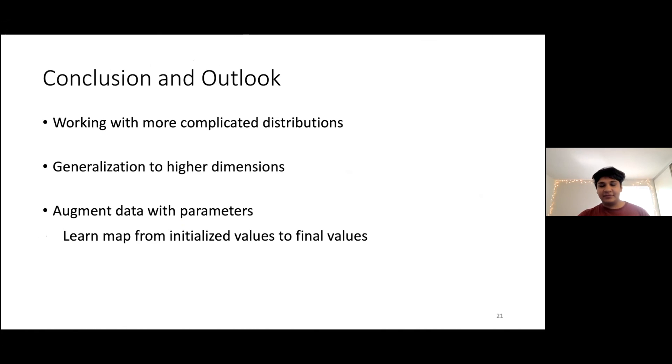So to wrap up, what we want to think about moving forward is working with more complicated distributions. So we've already applied this method to genuine physical data from the LHC Olympics dataset from the Large Hadron Collider, and the results are very interesting and novel. The next thing we want to do is we want to generalize this to higher dimensions. So far, we've been working in few dimensions. The LHC Olympics data even is just a six-dimensional object. But in general, we want to work with things of much higher dimension, and we want to circumvent the curse of dimensionality, and we want to think more about how to do that. And finally, we want to think about augmenting the data with the parameters rather than learning the parameters directly, so that instead of learning the final values of the parameters, we're learning map from initialized values to final values. And we think this is one way in which we could circumvent the curse of dimensionality. Thank you.